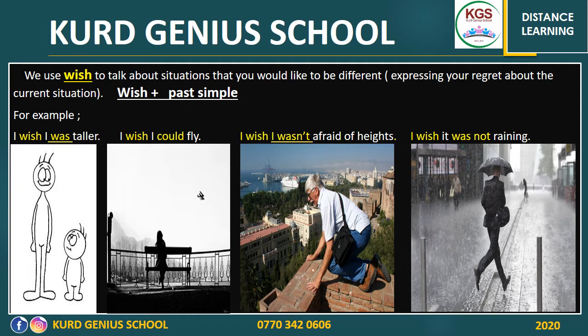Look at that man — he is afraid of heights. So in that case, he's afraid of heights, as you can see from the image. Look at what he said: 'I wish I wasn't afraid of heights.' His real situation is that he's afraid of heights, so he's using wish in hoping that the situation will be different from the way it is. It's quite clear from the image. So he said, 'I wish I wasn't afraid of heights.'